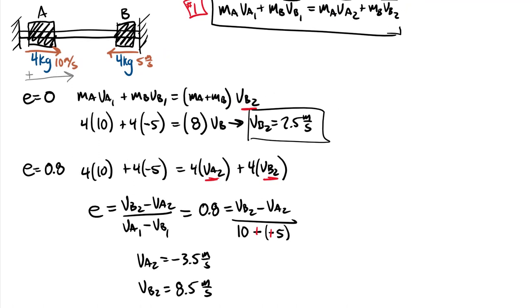Solving, we get vA₂ = −3.5 m/s (moving back to the left) and vB₂ = +8.5 m/s (moving to the right). Momentum was transferred from A to B. Because both masses were equal, each particle experienced the same change in velocity of 13.5 m/s — an interesting side note. That wraps up our lecture on one-dimensional impact and conservation of linear momentum.